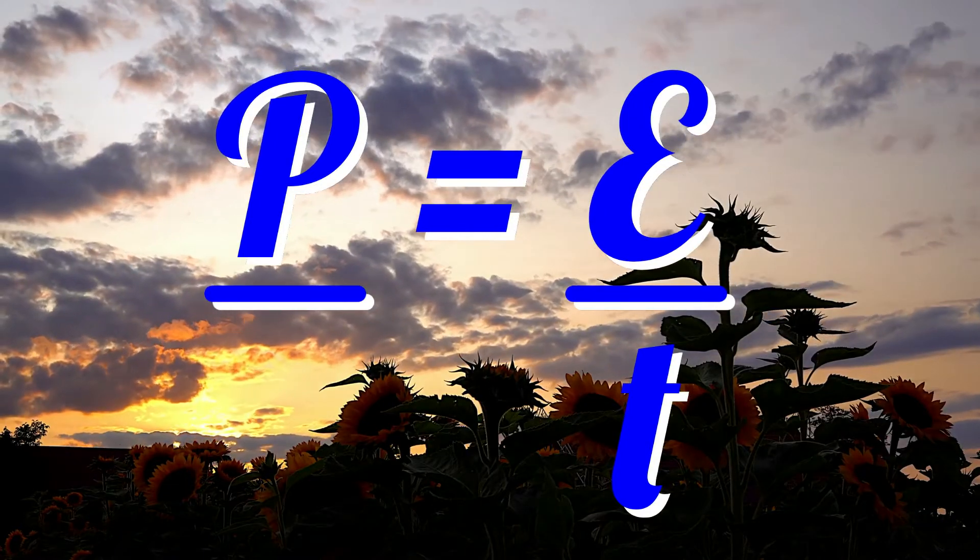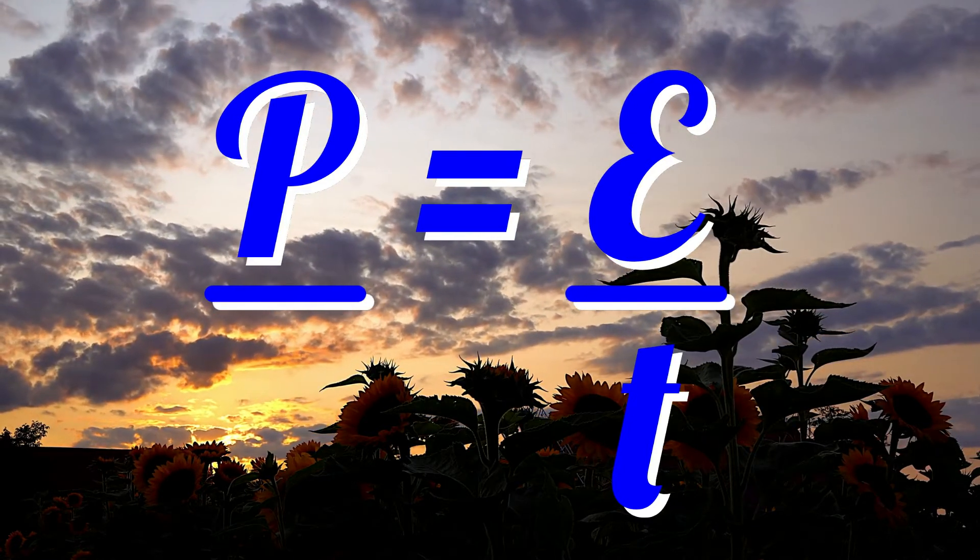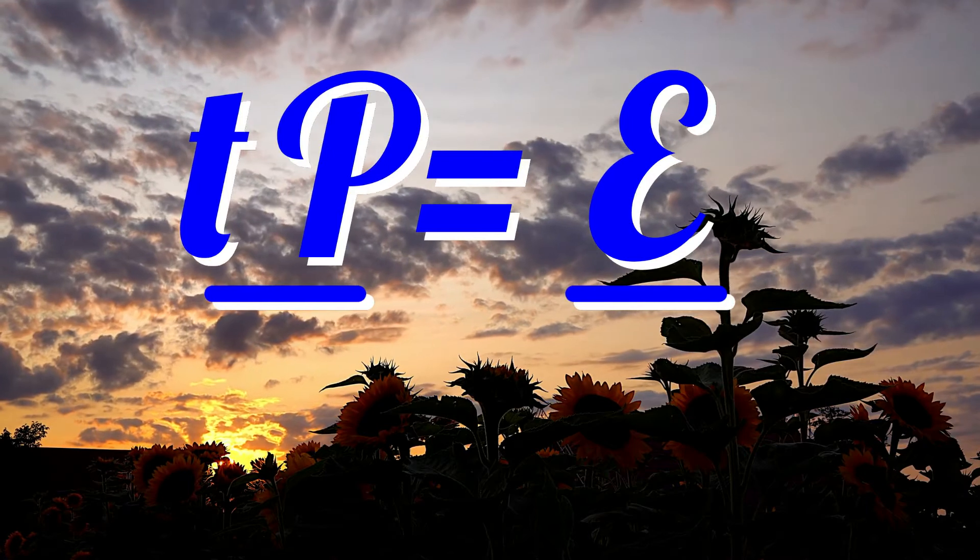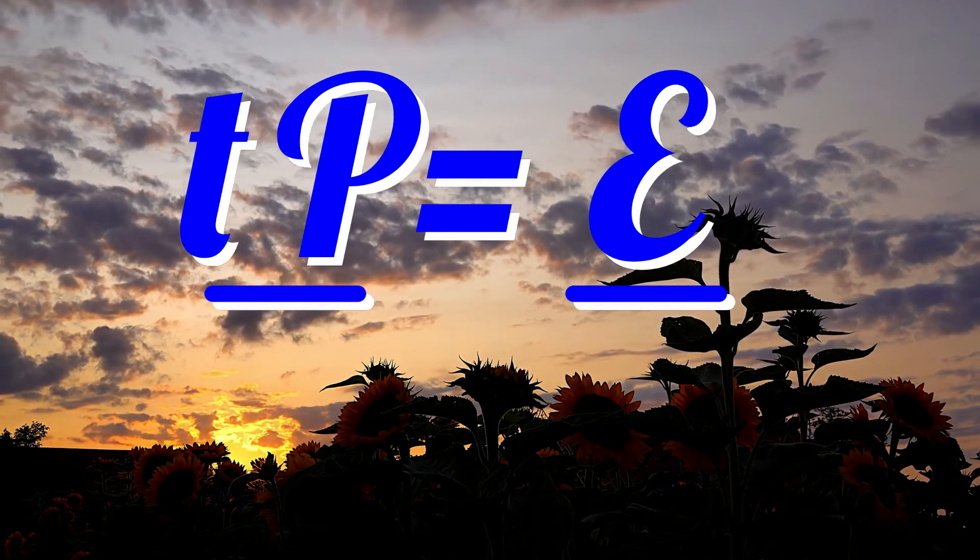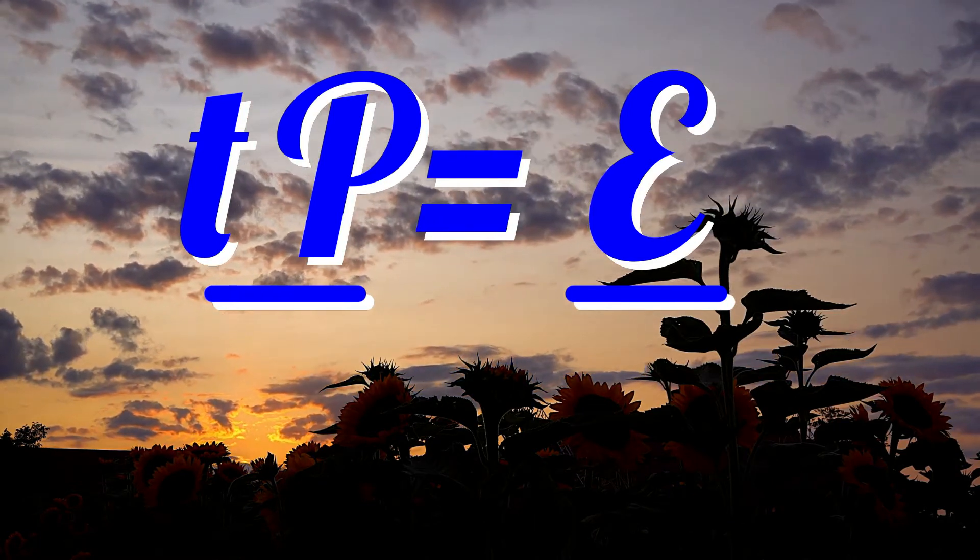To make energy the subject of the equation, if you know the power and time, multiply through by time. That is, move the T up next to the P: TP equals E. Time multiplied by power equals energy.